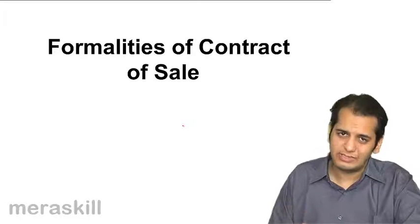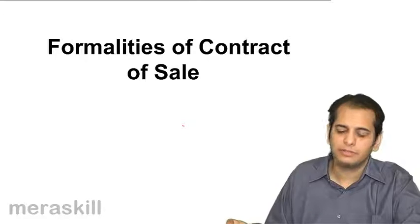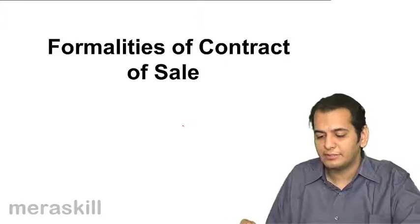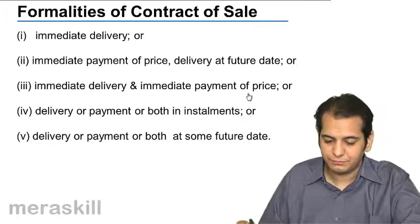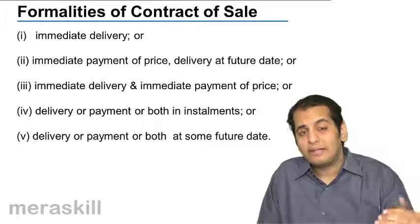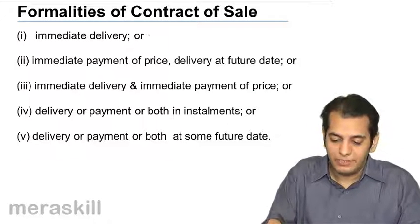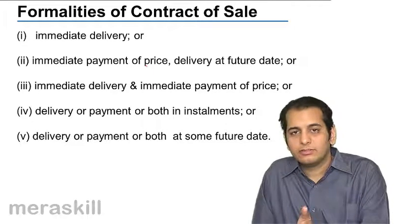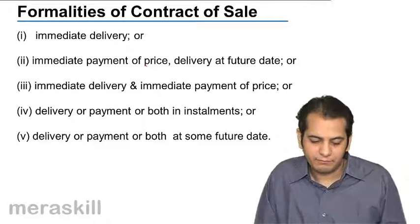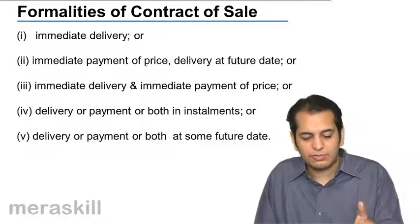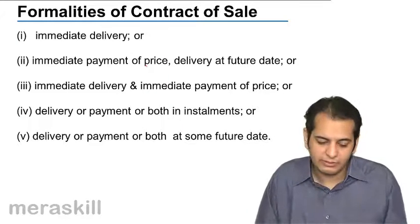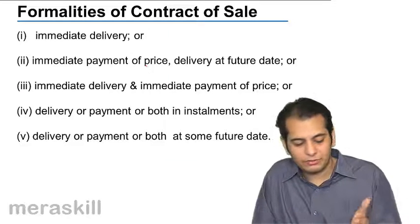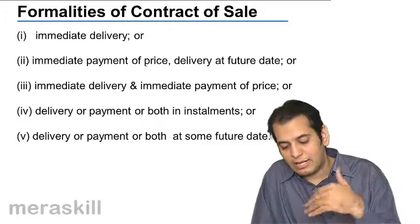After understanding what is a sale and what is an agreement to sale, let us understand what are the formalities in a contract of sale. The formalities are: first, immediate delivery; second, immediate payment of price and delivery at a future date; third, immediate delivery and immediate payment of price; fourth, delivery or payment or both in installments; and fifth, delivery or payment or both at some future date.